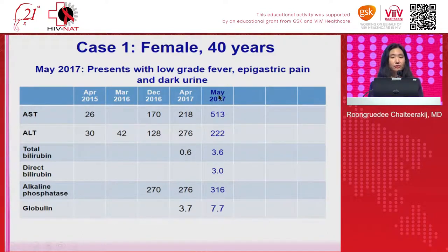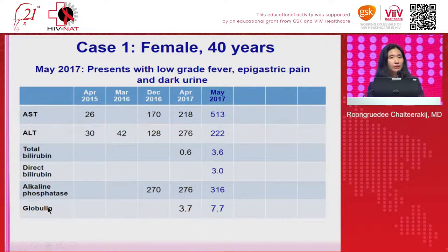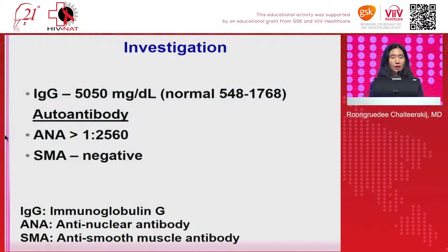Looking back again at her liver function test, when we look at globulin, it was very high at 7.7. The normal level of globulin is 3.3. When we see the globulin level is very high in a patient presenting with hepatitis, this raises the question of whether the patient has high globulin because of autoimmune hepatitis. So next we worked out whether she had autoimmune hepatitis. We tested for IgG and gamma globulin level, which was very high — 3-fold the upper normal limit.